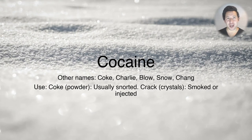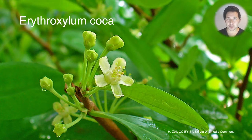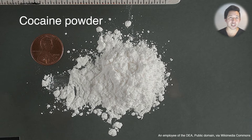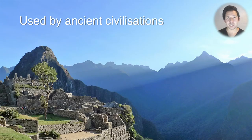Cocaine has a lot of names. It's commonly known as Coke, Charlie, Blow, Snow, even Chang. It's usually used as a powder and it's snorted, but it can also be formed into crack, which is a kind of crystal substance that's usually smoked. It comes from the coca plant which is endemic to South America, and it looks like a plain white powder in its powder form. When it's crack it looks like rocks, and that's why it's called crack cocaine. It's been used for thousands of years.